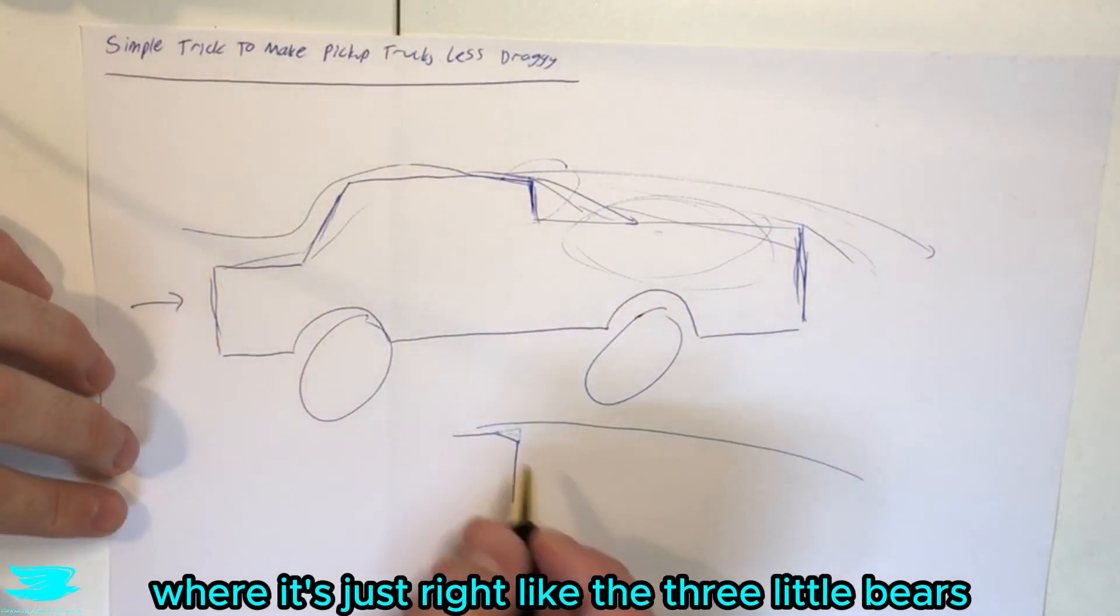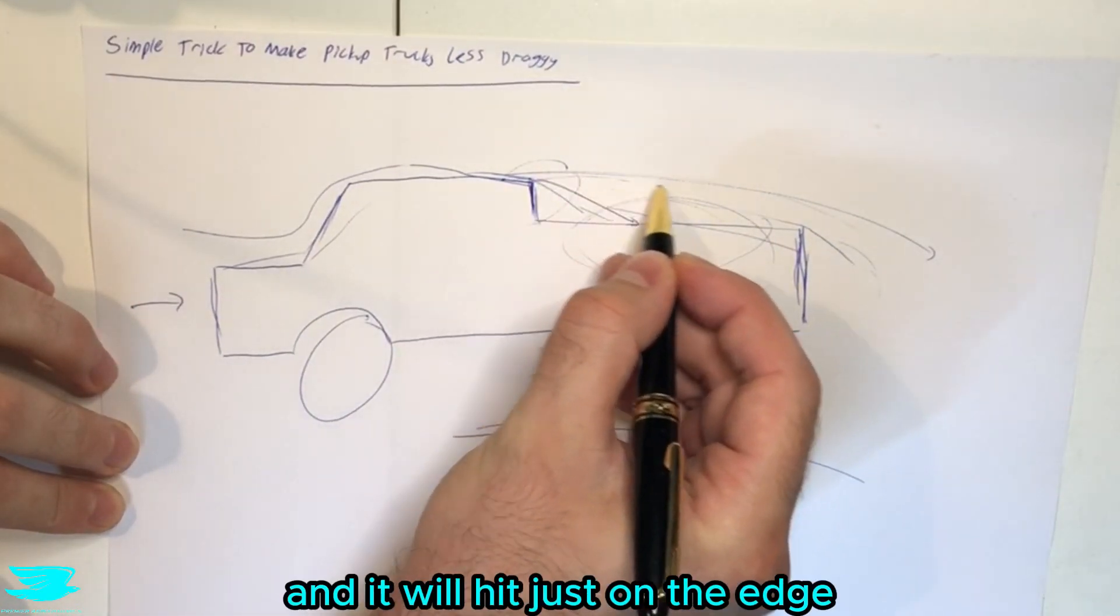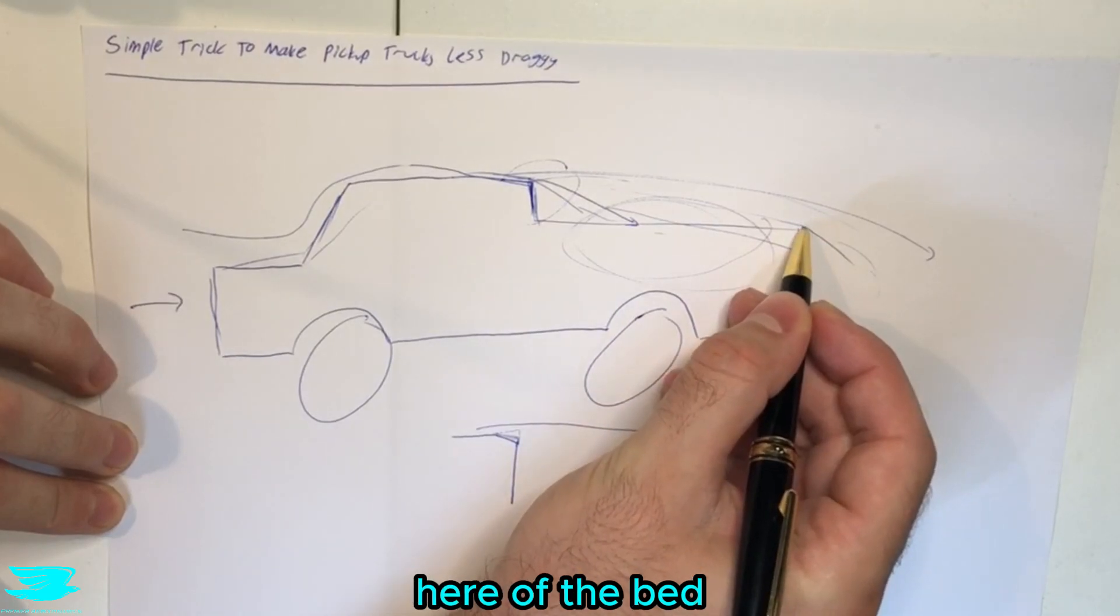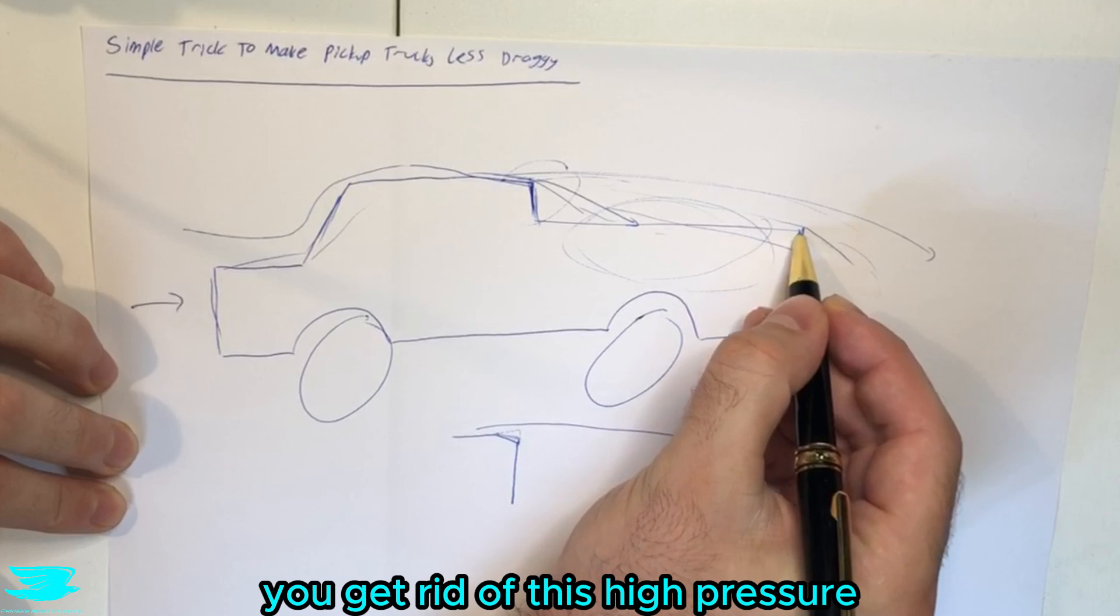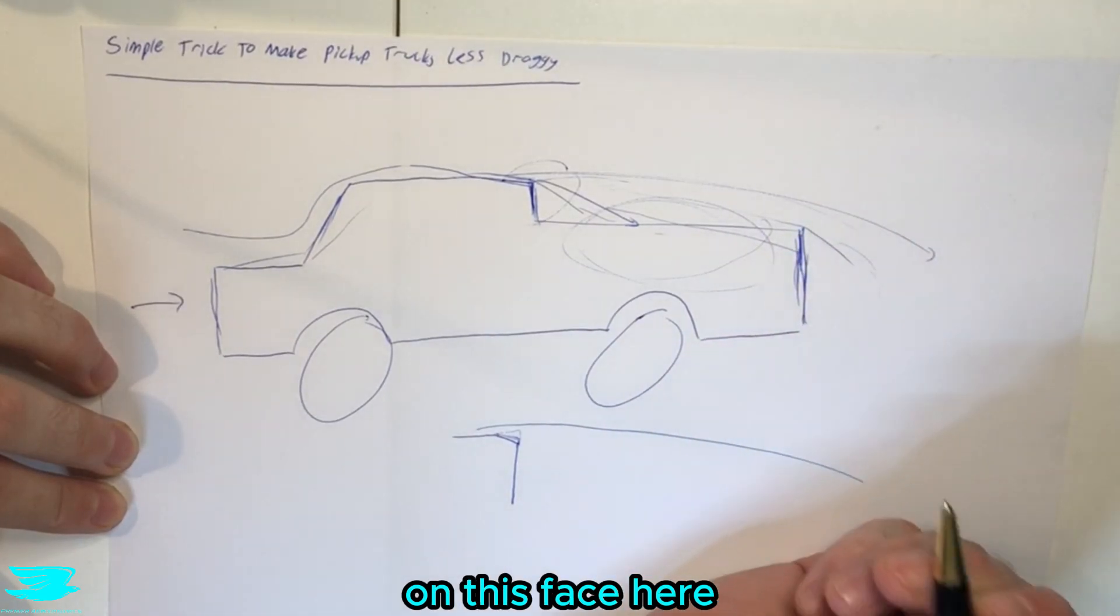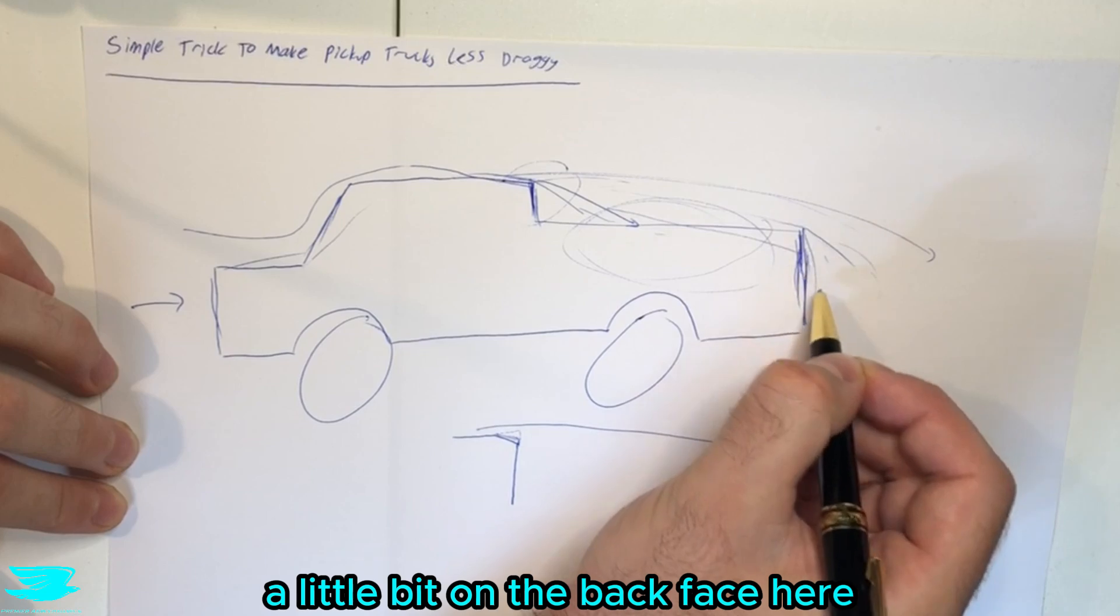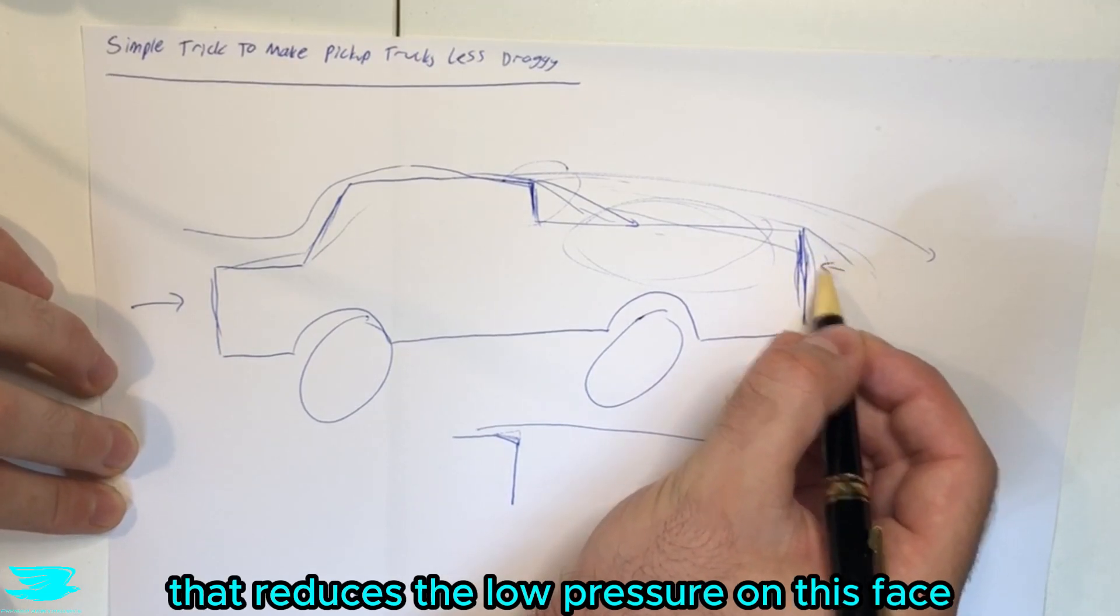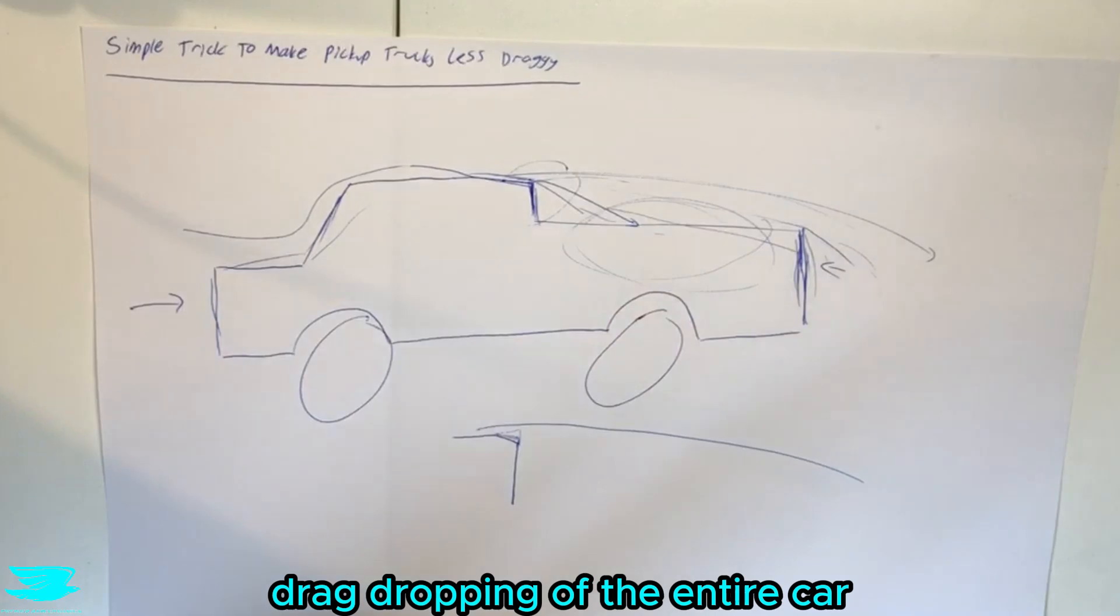So there's a sweet spot where if it's just right like the three little bears the flow will come down and it'll hit just on the edge here of the bed so that the lip there and come down. What this does is first of all you get rid of this high pressure on this face here but now you get a pressure recovery a little bit on the back face here so that reduces the low pressure on this face which then results in the pressure drag dropping of the entire car.